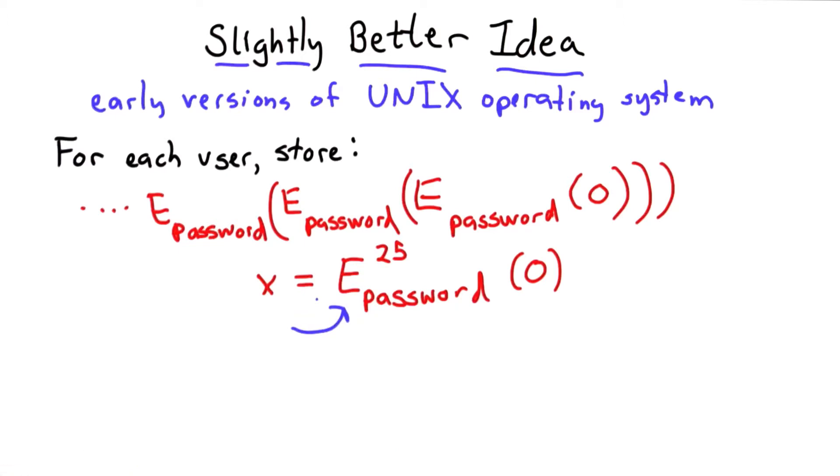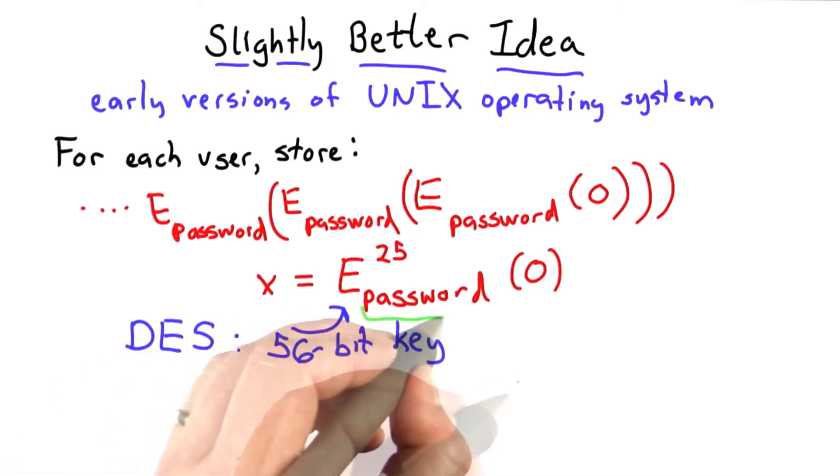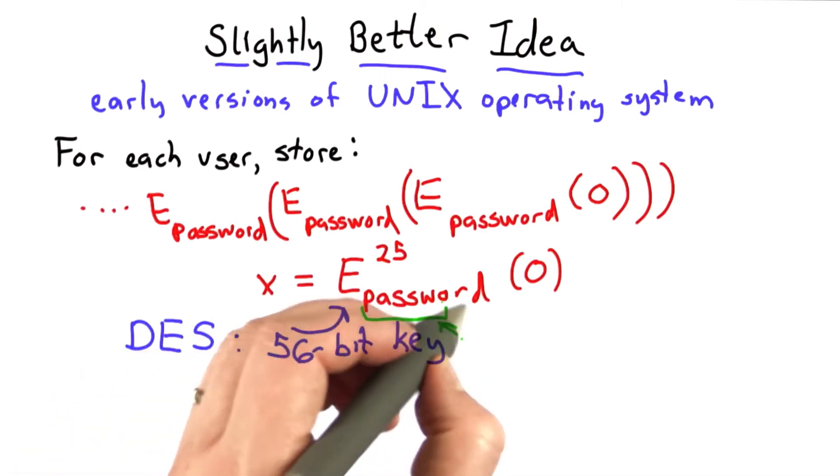There are some problems with the way this was done in early Unix systems. The encryption function was DES, the data encryption standard, which used 56-bit keys.